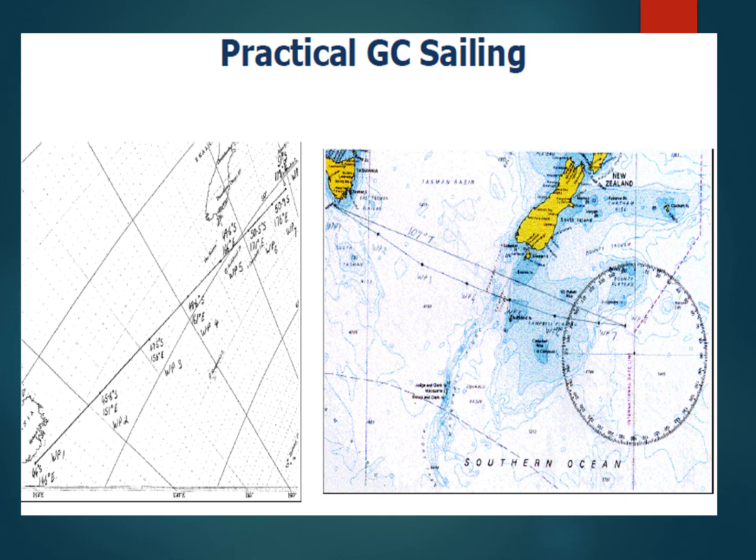To summarize the process: draw the great circle course on the gnomonic chart as a straight line between port of departure and destination. Note down waypoints at every five-degree longitude interval. Plot those waypoint coordinates on the Mercator chart. Join the waypoints — if a rhumb line course is straighter or shorter, use that; otherwise join as many waypoints as possible. In any case, the number of course alterations will be much less when sailing rhumb line courses on Mercator charts.